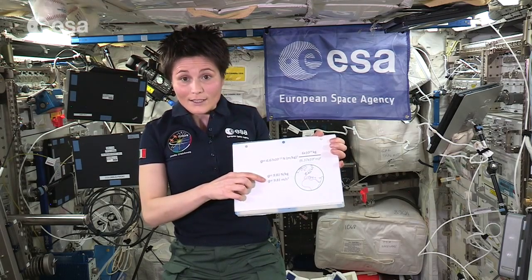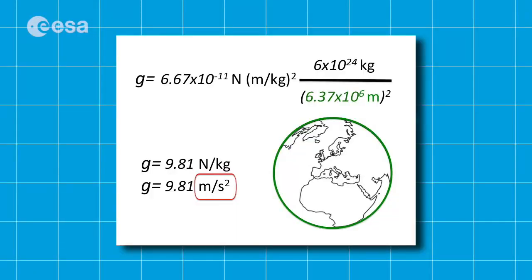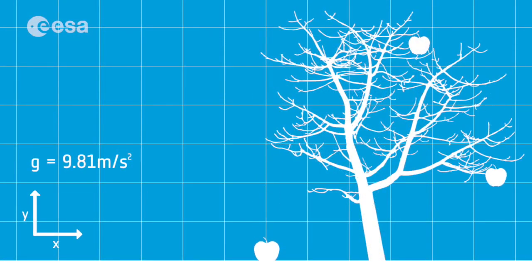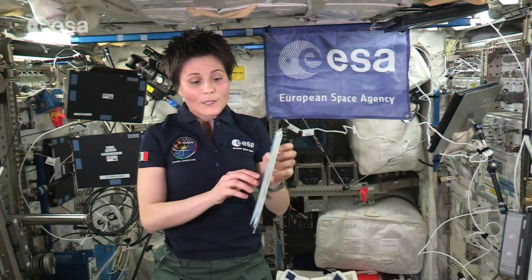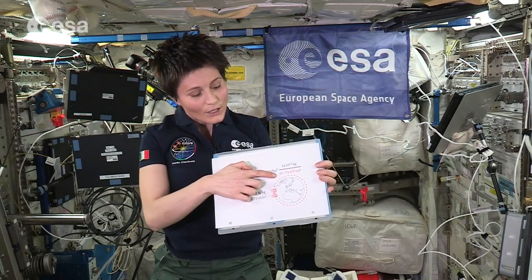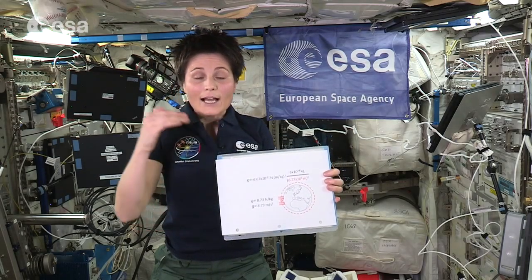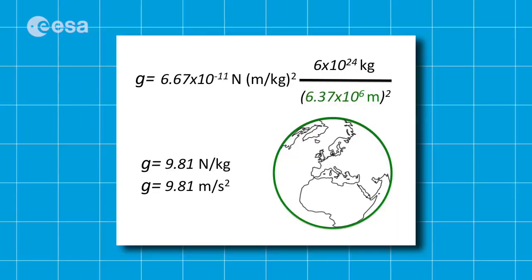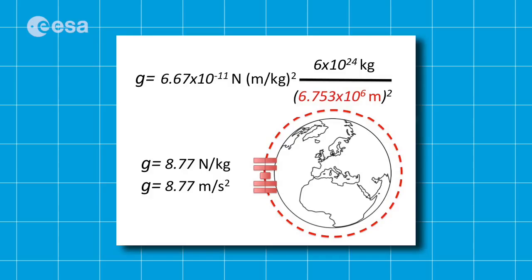Or we can also express it — and that's equivalent — as meters per square seconds. And that is the acceleration of a free-falling object in the gravitational field. You can make your own calculations for the International Space Station. Just add to the radius of the Earth the altitude of the ISS above the surface of the Earth, which is about 400,000 meters.